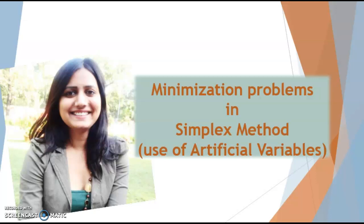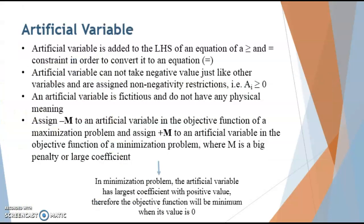In order to move forward we'll first understand about the artificial variables. Artificial variables are added to the left hand side of an equation of a greater-than-or-equals-to and equals-to constraint in order to make the equation. They do not take any negative value and are assigned non-negativity restrictions just like other variables.